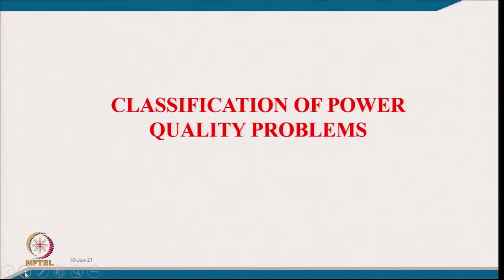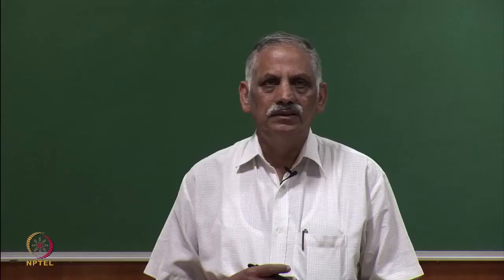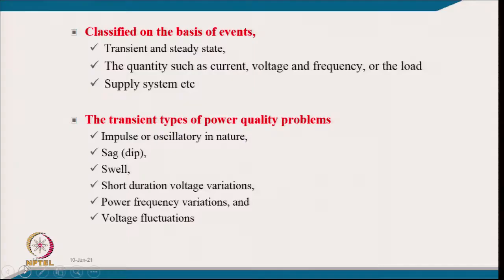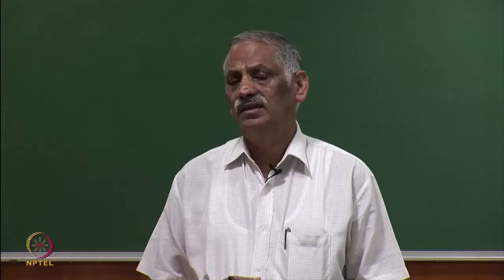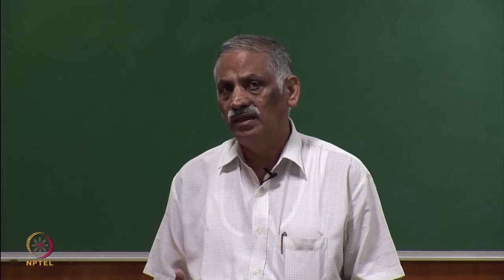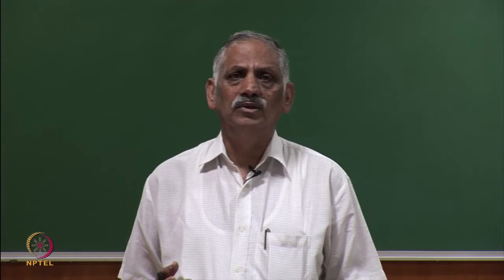Power quality problems are classified in several ways. One classification is based on the event — it can be transient or steady-state. Another is based on quantity — it can be a power quality problem in current, such as reactive current, harmonic current, negative sequence current, or neutral current; or a power quality problem in voltage.